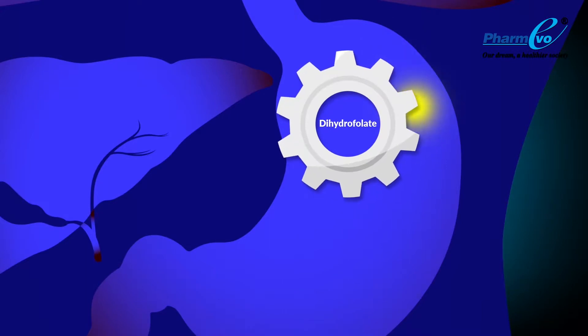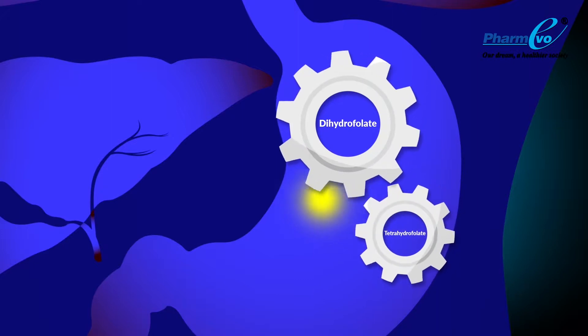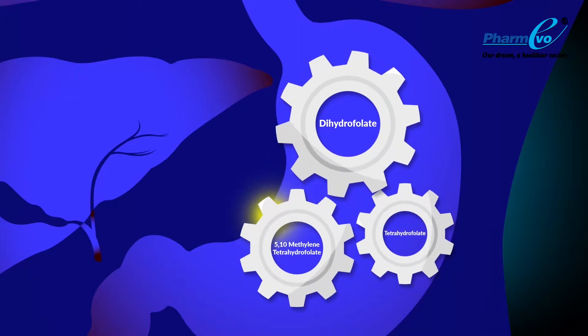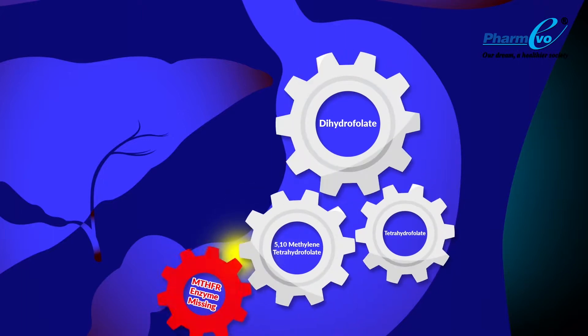Initially, it converts into dihydrofolate, then dihydrofolate converts into tetrahydrofolate, which is then converted into 5,10-methylene tetrahydrofolate, and finally it goes through a reductase reaction with the help of methylene tetrahydrofolate reductase enzyme.